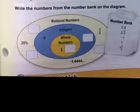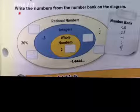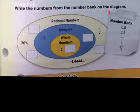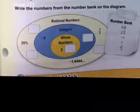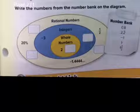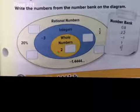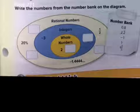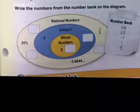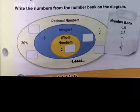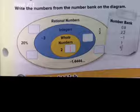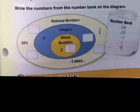We're going to fill this out by writing the numbers from the number bank on the diagram. Our number bank has decimal .8, the number 2.2 with bar notation, negative one, one, and one and two-thirds. So for whole numbers: two is a whole number and one is a whole number, so go ahead and write one right there next to the two.